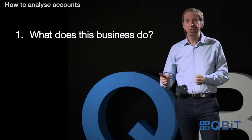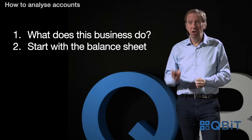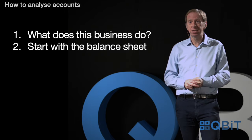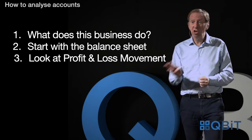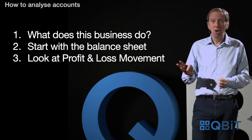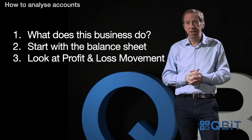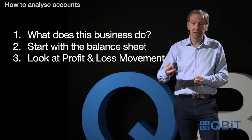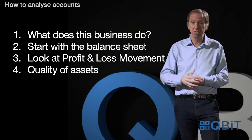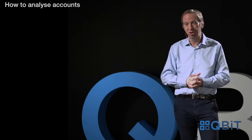So that's it — it's easy, anybody can do it. Four stages: one, what does the business do? Two, find the balance sheet and look at the net assets. Three, look at the profit and loss — is it going up or down? — and work out what that's done to the net assets. And fourthly, analyse the quality of the assets. Anybody can do it. Thank you for watching.